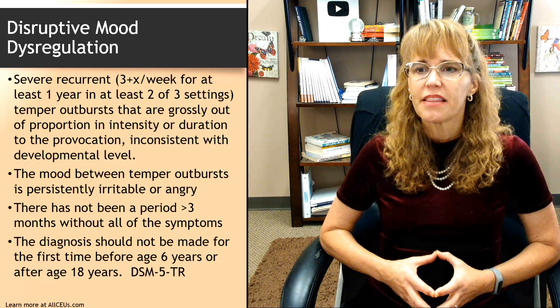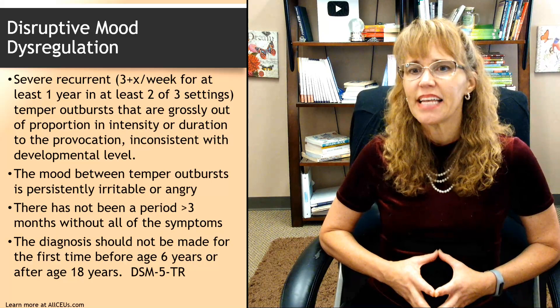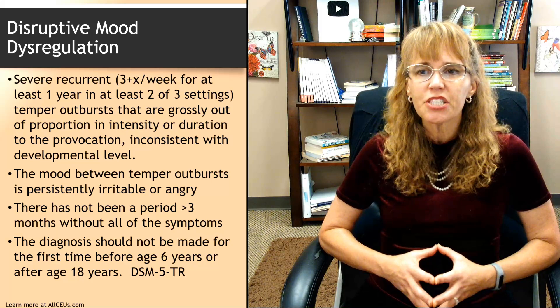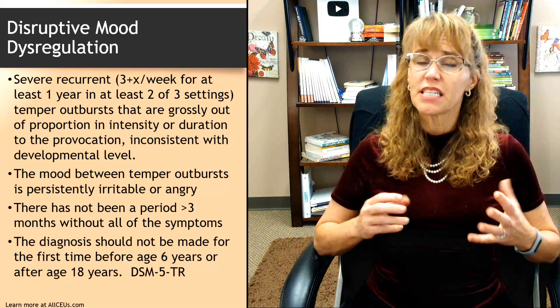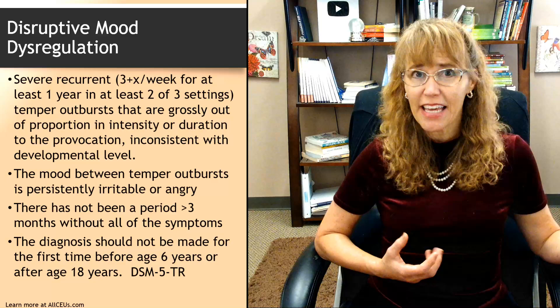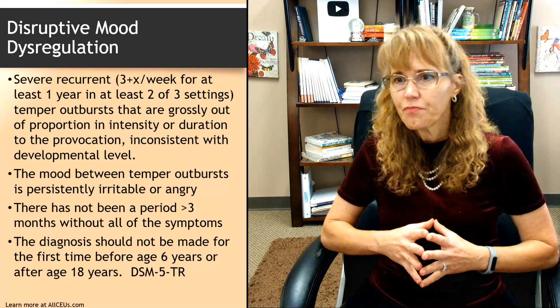Disruptive mood dysregulation disorder involves severe recurrent temper outbursts that are grossly out of proportion in intensity or duration to the provocation, inconsistent with developmental level, occurring at least three times per week for at least one year in at least two of three settings. In contrast to ODD, the temper outbursts in DMDD don't have to be severe — they can be subjective — so that's a key difference.